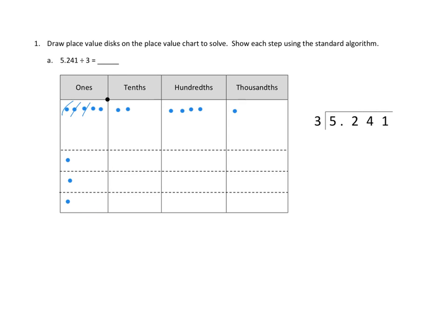So we're going to have to decompose those two remaining ones into tenths. Each one becomes ten tenths, giving us twenty new tenths. Combined with the two tenths already on our chart, we now have twenty-two tenths total to work with.